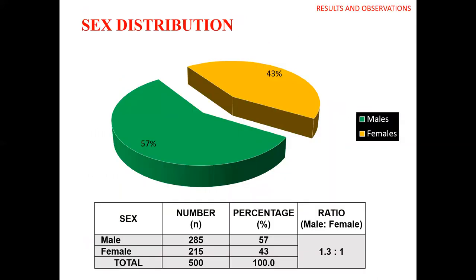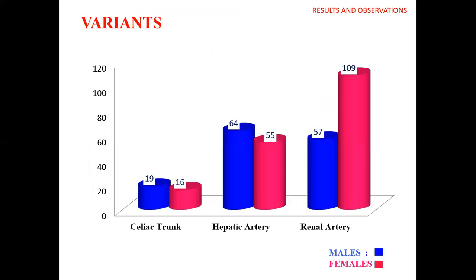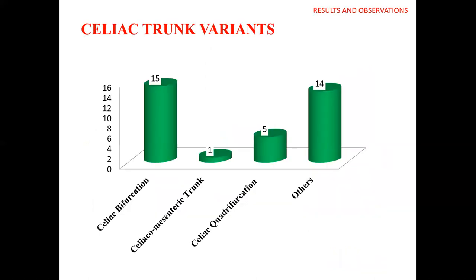In the results and observations, the study population was most commonly male at 57%. Variance of the celiac trunk was seen predominantly in males, and hepatic artery variants also showed a predominance in males, while renal artery variants were seen most commonly in females. Celiac bifurcation was seen more commonly compared to celiacomesenteric trunk, celiac quadrification, and other variants.